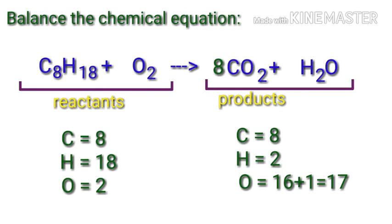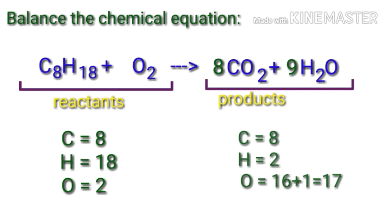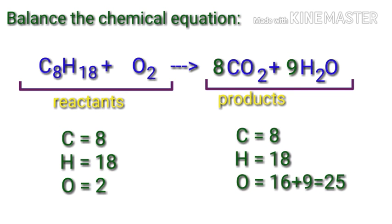To do this, we need to use another coefficient of 9 in front of H2O. Now the number of carbon atoms and number of hydrogen atoms are balanced on both sides, but the number of oxygen atoms are not balanced.